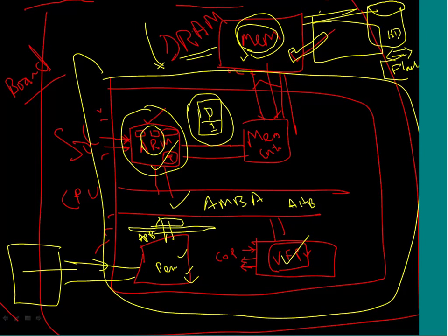We will not talk about anything specific to a particular memory controller implementation. We will address issues from the programmer's perspective - how memory performs, how it interfaces with the processor, what different kinds of memories exist, what technologies are available, how they differ from each other, and how they help us achieve our system goals.